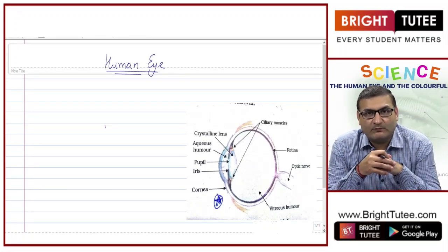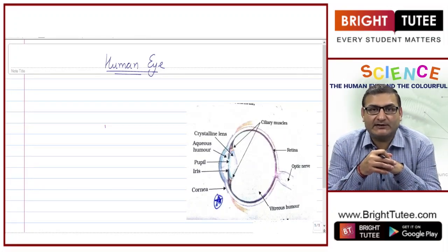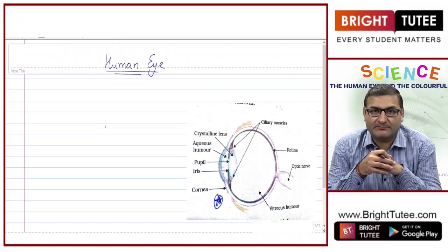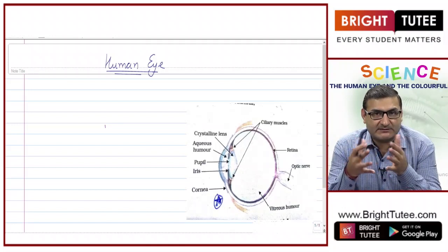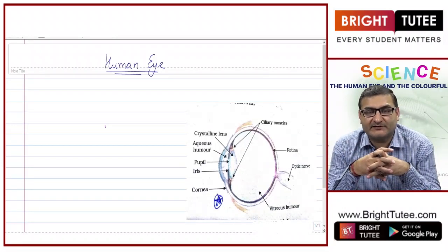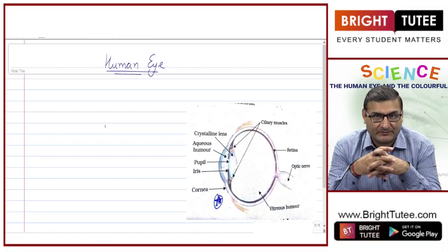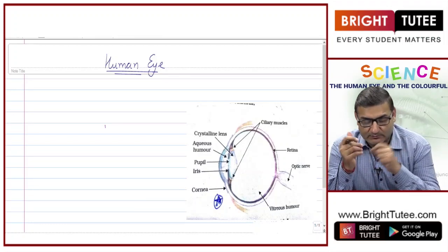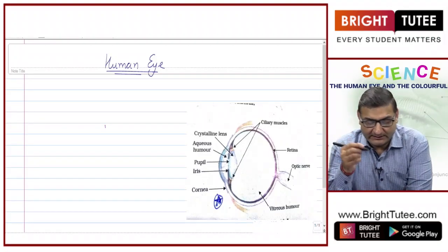What are the various parts of the human eye, and we will also see the functions of each and every part. This is quite important — let us start with the human eye.